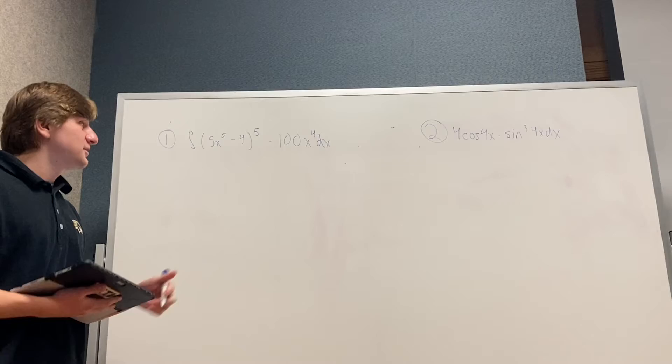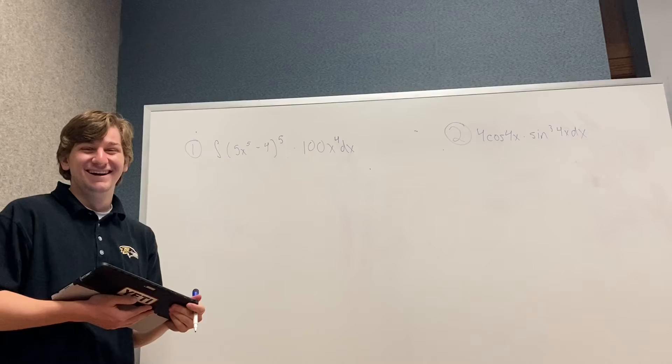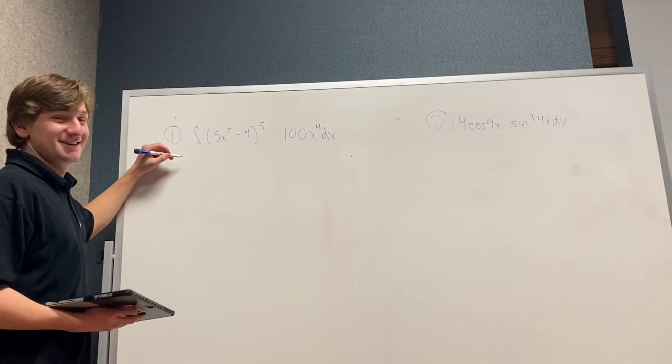Alright, so we're going to try out these problems with the students. Do I have a lucky student who wants to help me? Connor, yes, you. So what's the first step here? You have to find the u, which is 5x to the 5th minus 4. Very good.